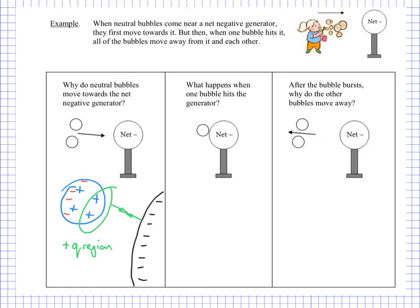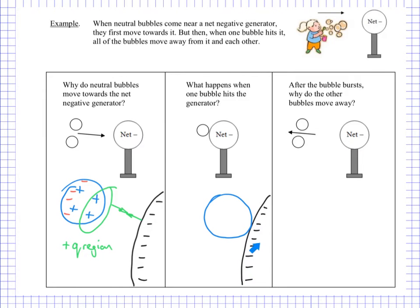What happens when these bubbles hit the generator? The generator — we're going to assume that it's just left on. It's basically an unlimited supply of negative charge. So when the bubble hits the generator, there's movement possible: the surface of the Van de Graaff is a conductor, so it's quite easy for these electrons to move around the surface of the Van de Graaff. And they're going to move, or at least they have the possibility of moving into the bubble.